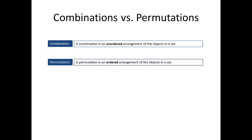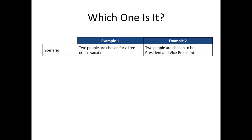When given a specific problem to solve, students often run into challenges deciding whether the problem is an example of a permutation or a combination. So I want to take a little time here and discuss how I go about distinguishing the two. The way I approach the question goes like this: I pick a specific example of the situation, a specific selection, a specific choice, and then I change the order of it and see if the results are different.